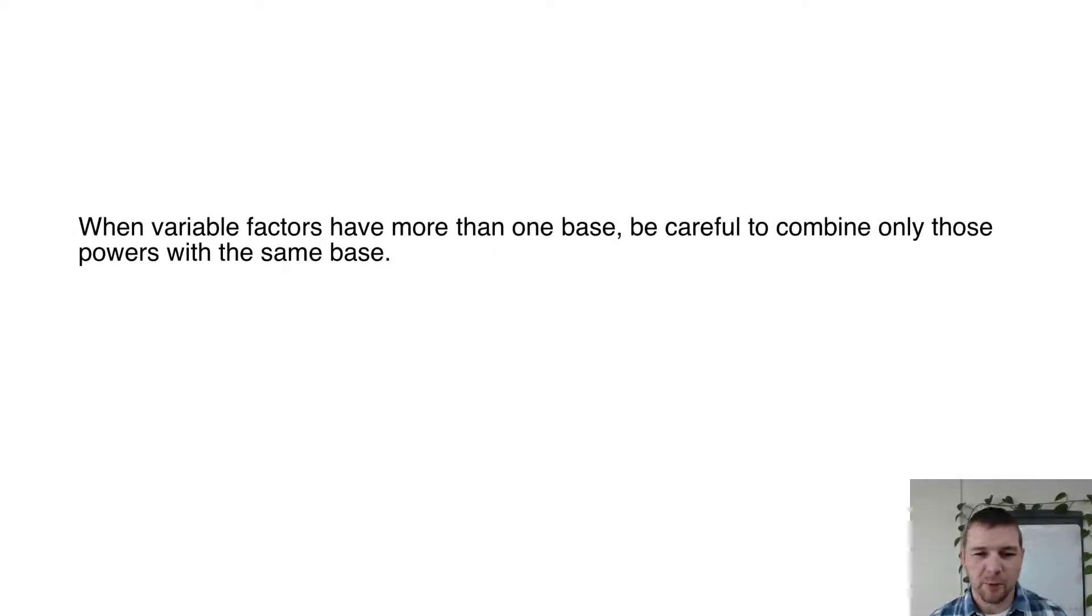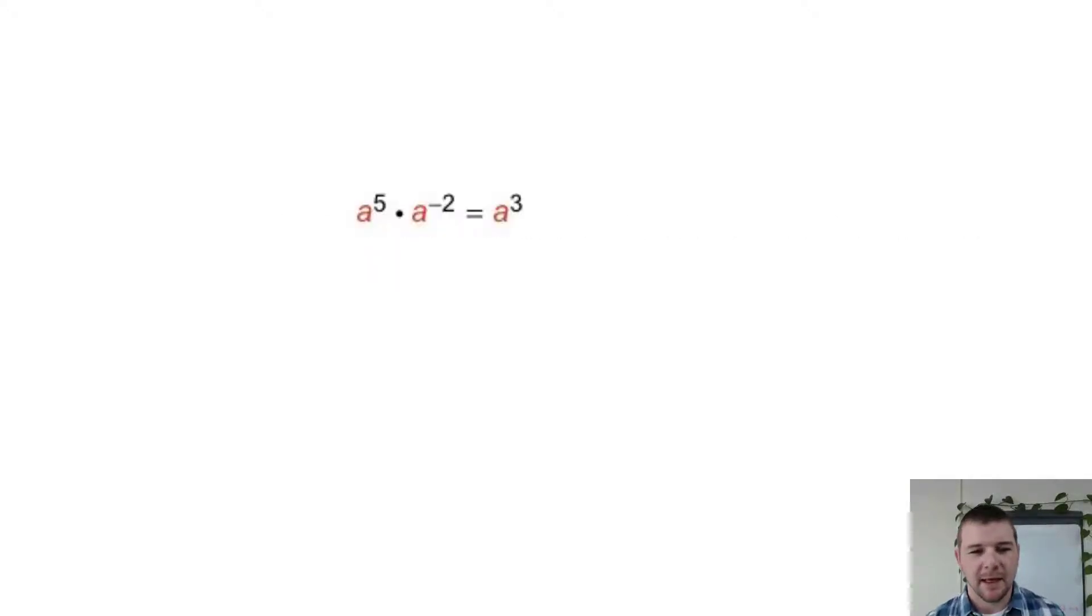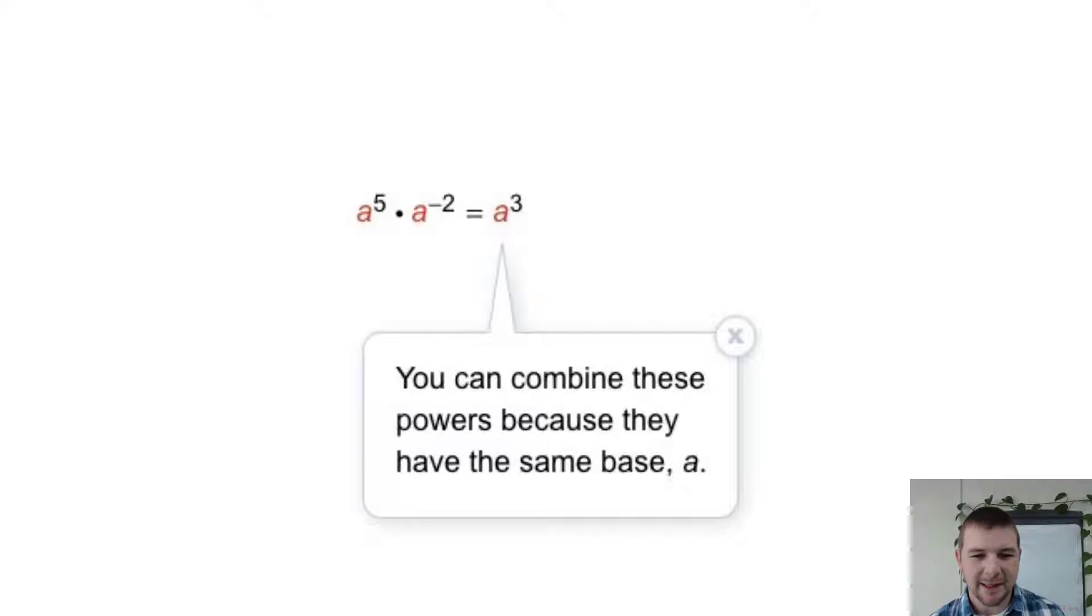When variable factors have more than one base, be careful to combine only those powers with the same base. For example, a to the fifth times a to the negative two power equals a to the third. You can combine these powers because they have the same base, a.